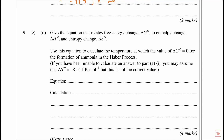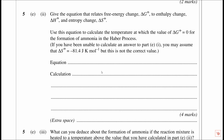The next question asks for the temperature at which the reaction becomes feasible. The key point is that at that temperature, delta G equals zero. Using delta G equals delta H minus T delta S, and rearranging gives T equals delta H over delta S. Our delta H is minus 46.2 kJ/mol and our entropy value was minus 99.5 J/K/mol. Converting entropy to kilojoules by dividing by 1000 and calculating gives a value of 464 Kelvin. That's worth four marks.